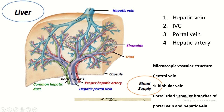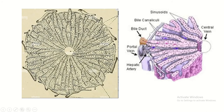Through the porta hepatis the hepatic artery and portal vein enter. In the classical hepatic lobule, at the margin of the lobule, there are smaller branch offices of the portal vein and hepatic artery which build up the portal triad. This is the peripheral margin of the classical hepatic lobule.